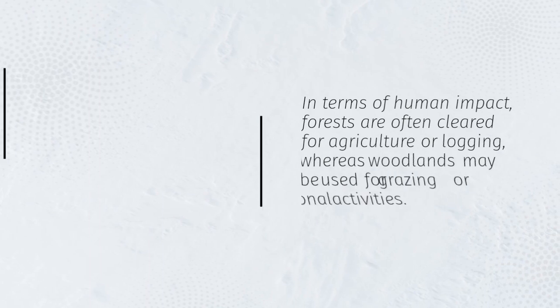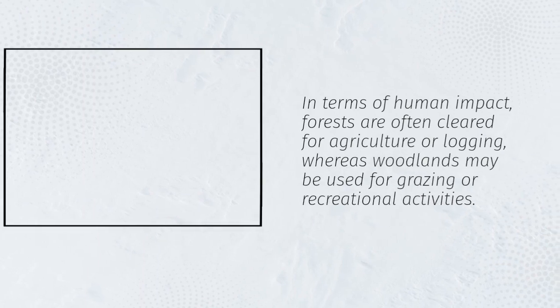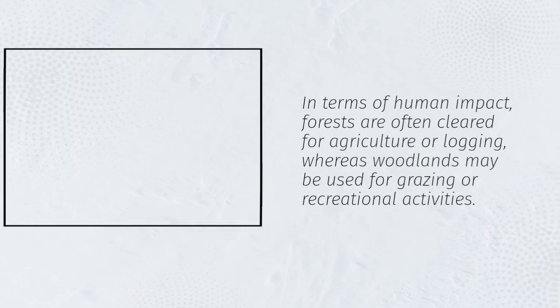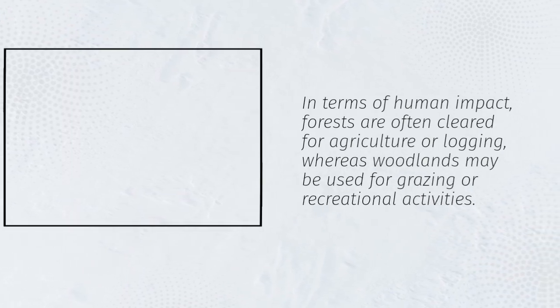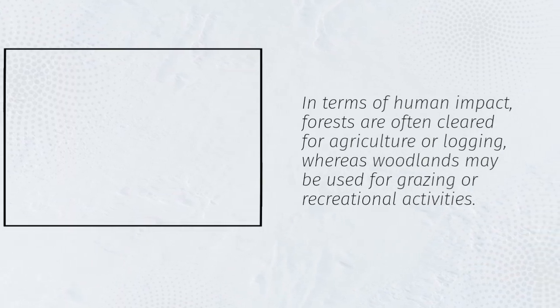In terms of human impact, forests are often cleared for agriculture or logging, whereas woodlands may be used for grazing or recreational activities.